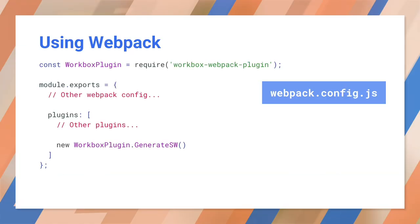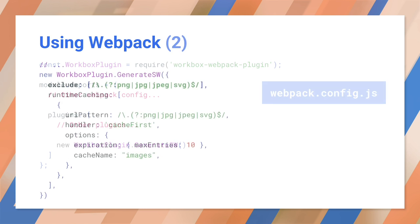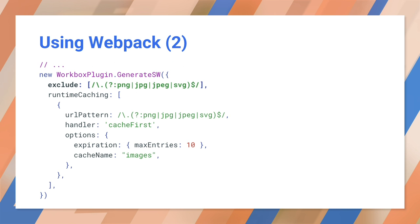Webpack is another popular build system. Workbox supplies a plug-in for Webpack, so you can load that instead if you want. Calling generateSW creates a service worker. By default, the plug-in precaches everything. This matches Webpack's default of collecting all the files in your app. You can copy our custom configuration into Webpack. Here, we're excluding all of the image files from precaching so they don't get picked up by default. Instead, they get their own cache.